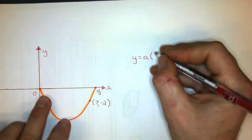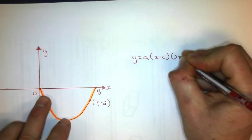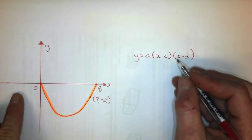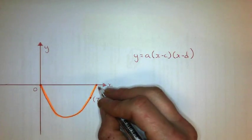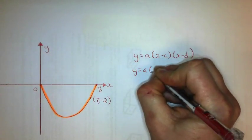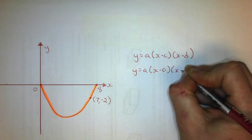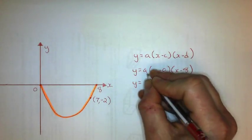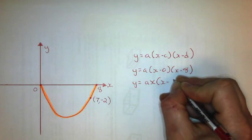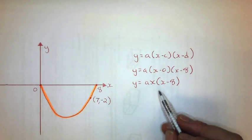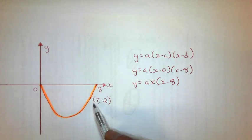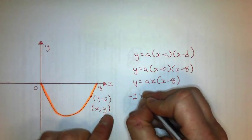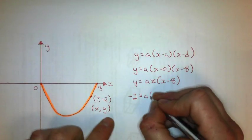Now let's look at another example where I'm given the x-intercepts, but not necessarily the y-intercept. I write the general formula: y equals a times x minus c, times x minus d, where c and d are the x-intercepts. Here, one x-intercept is 0 and the other is 8. Since x minus 0 is just x, this simplifies to a times x, times x minus 8.